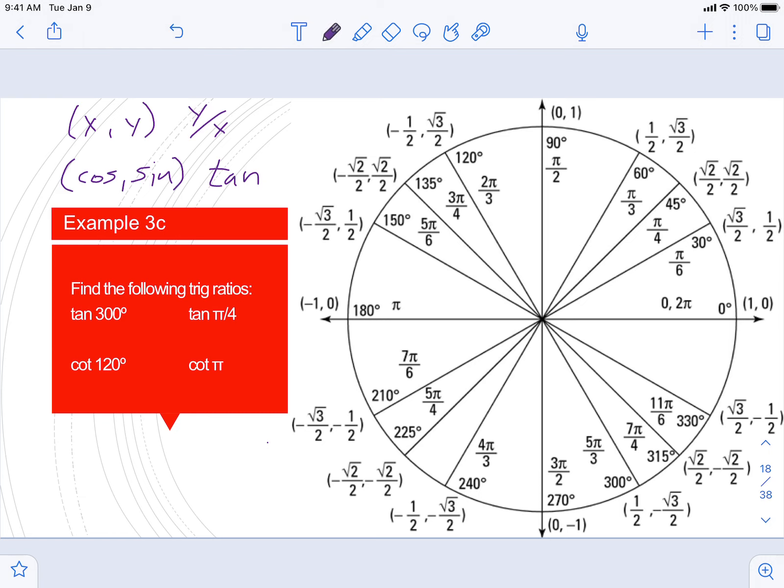And then our cotangent value is going to be the reciprocal of tangent, so x over y instead of y over x.